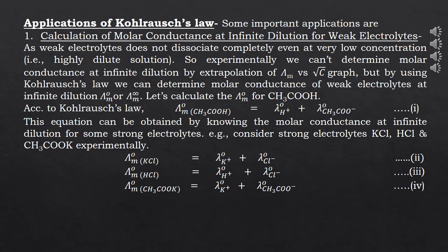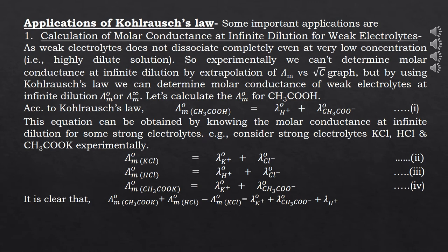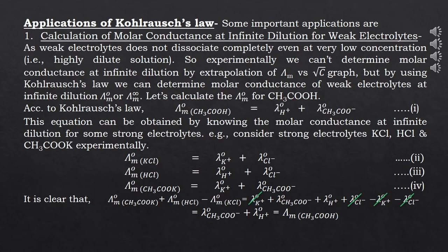So by operating these three equations of strong electrolytes — equations 2, 3, and 4 — we can easily obtain the required molar conductance for acetic acid. It is clear that if we add the molar conductance of potassium acetate and HCl, and subtract the molar conductance of KCl from it, we can easily obtain λ° for acetic acid, as λ° for K⁺ and λ° for Cl⁻ cancel out. So we are left with λ° for acetate ion plus λ° for H⁺ ion, which contributes to the total molar conductance at infinite dilution for acetic acid.